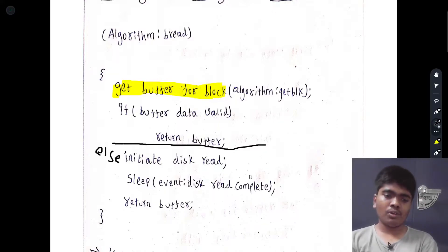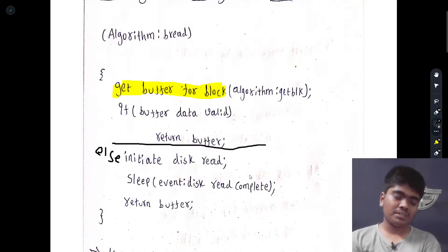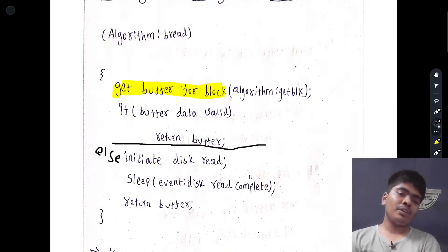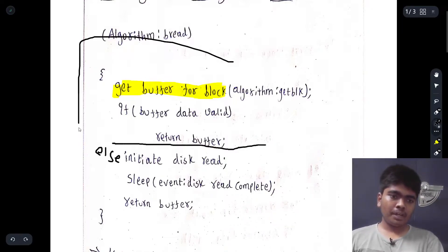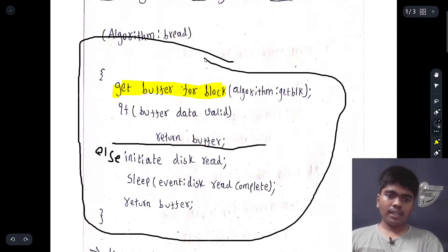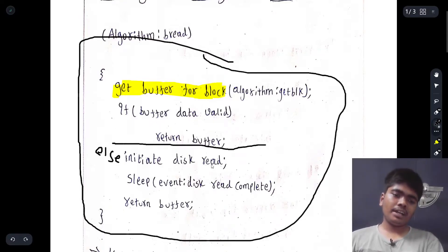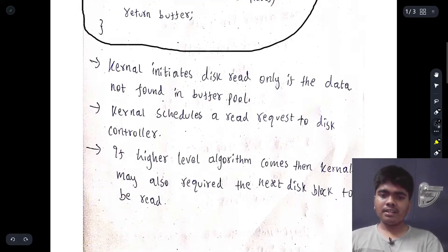After the disk reading is completed, we put that disk read event to sleep. Then we return the buffer to that particular data structure after reading the data from the disk. The bread algorithm only cares up to this point — if data is not in the buffer, it initiates the disk read and returns the required data.